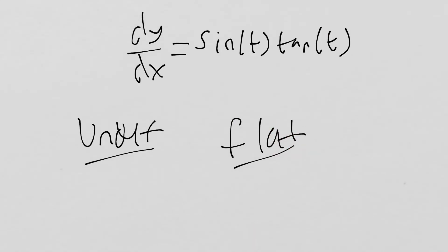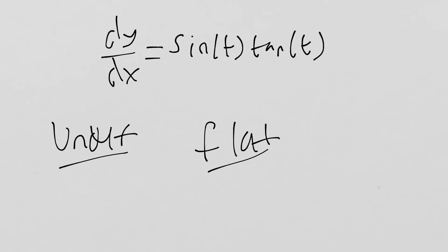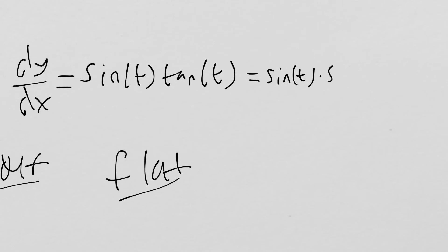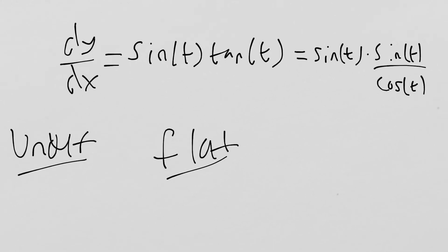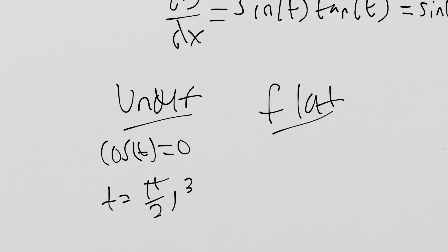Where is it undefined? It's going to be undefined whenever we have a divide-by-zero error. We can remember that tangent is just sine over cosine. So this is going to be undefined when cosine is equal to zero — when is cosine equal to zero? That happens at π/2 and 3π/2.